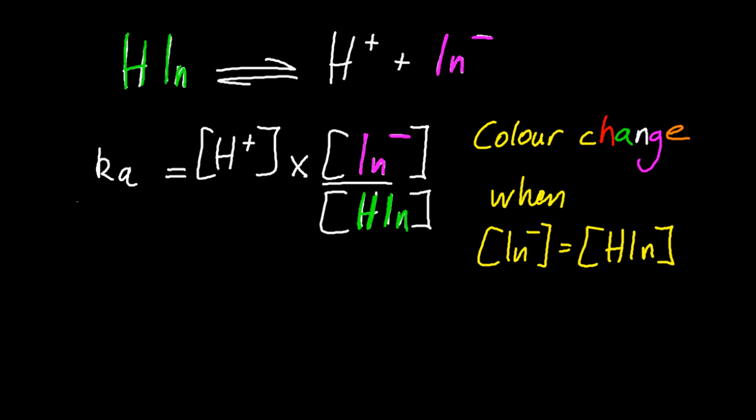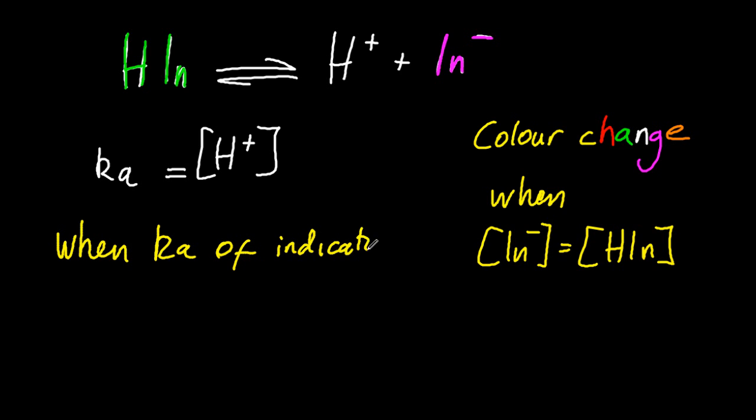Now that's a bit subjective, but that's an assumption you can make. So those two both cancel, which gives me Ka for the indicator equals H-plus at color change. Well, that's quite handy.